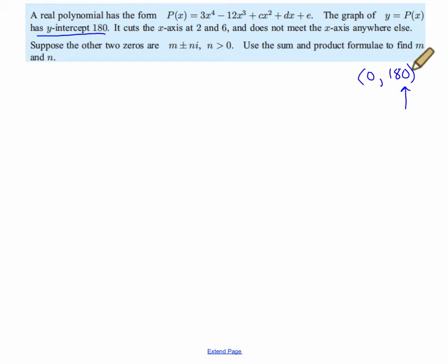And if you think about it, that has to be our constant, because if x equals 0, what's left is e. So e is equal to 180. Look at that, look how much we've done already. It cuts the x-axis at 2 and 6, so I already have two roots, x minus 2 and x minus 6.